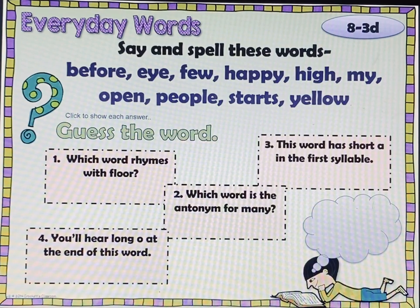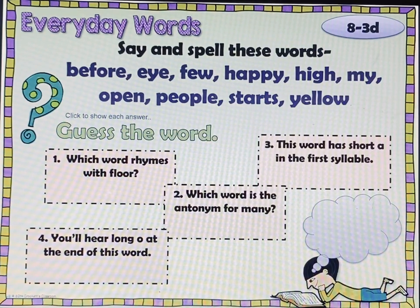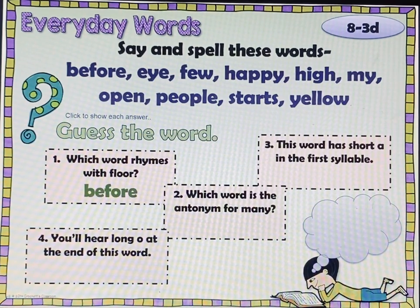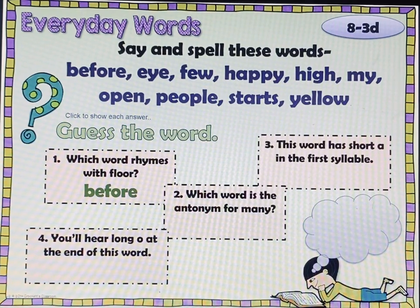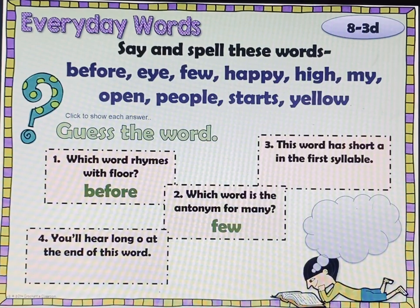Click to show each answer — we're going to guess the word. Which word rhymes with 'floor'? Go ahead and push pause and play. The first one: which one rhymes with 'floor' is 'before.' Floor and before. The second one: which word is an antonym for 'many'? Remember, antonym means opposite. Check, pause, play. Few — many and few are opposites.